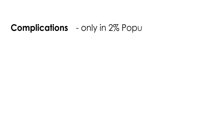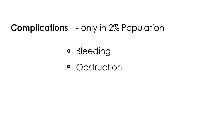The consequences only happen in 2% of the population, and then a further 2% of those people are the only ones who get complications, so complications are actually quite rare. But if they do happen, they include bleeding, obstruction, inflammation, diverticulitis, and tumors.